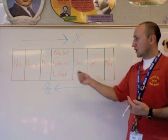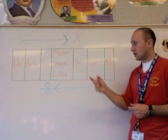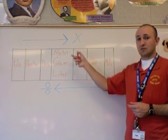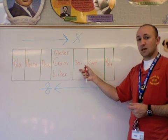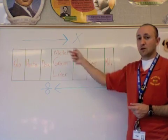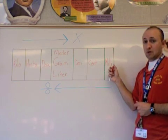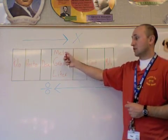When we go to the right, the values get smaller. If I have a decimeter, I have one-tenth of a meter. A centimeter would be one-hundredth of a meter, and a millimeter would be one-thousandth of a meter.